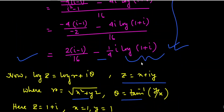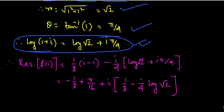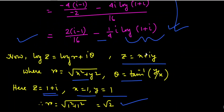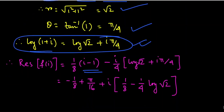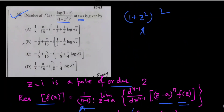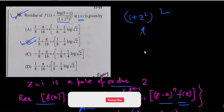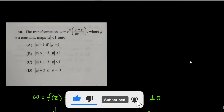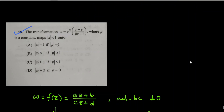Substituting log(1+i) = (1/2)ln 2 + iπ/4 into the expression and simplifying, we get: -1/8 + π/16 + i(1/8 - (1/4)ln 2). Separating real and imaginary parts, this matches option B, which is the correct answer for this problem.